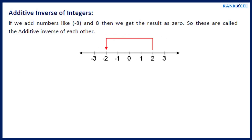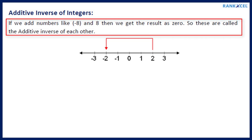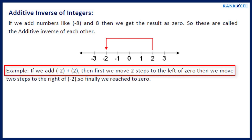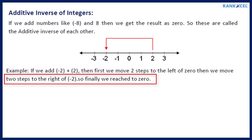Additive Inverse of Integers: If we add numbers like minus 8 and 8, we get the result 0. So these are called the additive inverse of each other. Example: If we add minus 2 plus 2, we first move 2 steps to the left of 0, then move 2 steps to the right of minus 2. We finally reach 0.